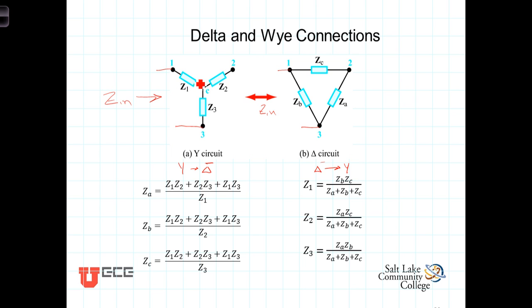The Y connected load impedances are Z1, Z2, and Z3. The delta connected are Z sub A, Z sub B, and Z sub C.